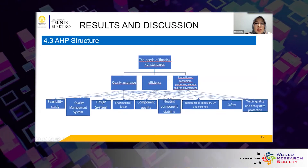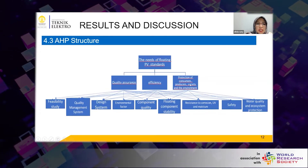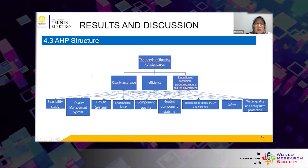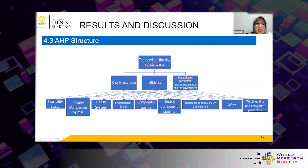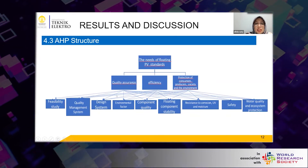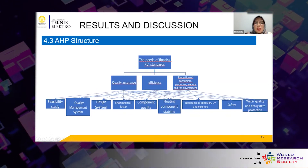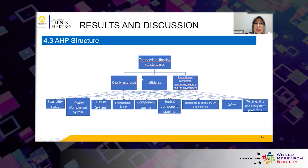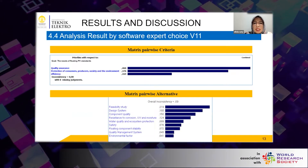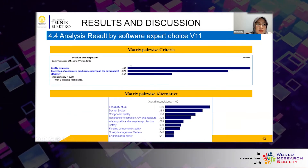The AHP structure is shown in this figure. Level 1 is the goal. Level 2 is the criteria from the results of the criteria identification. Level 3 is the alternative decisions to determine the priority needs of national standards for FPV that need to be formulated. Based on the results of the analysis using Expert Choice, the order of criteria is shown in this figure.